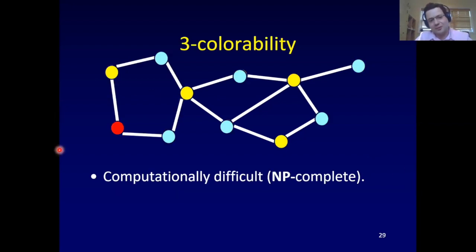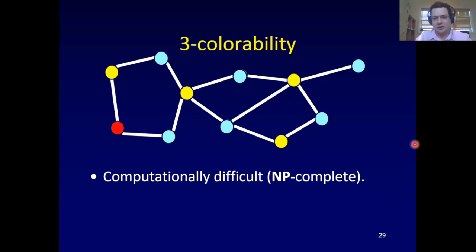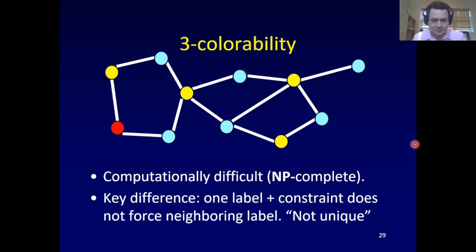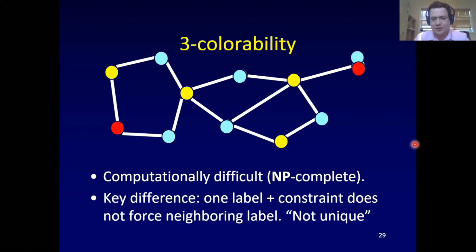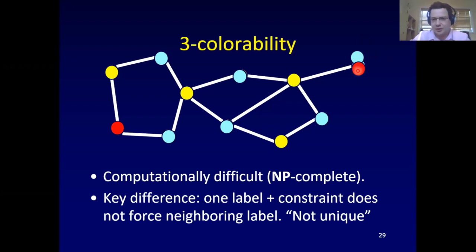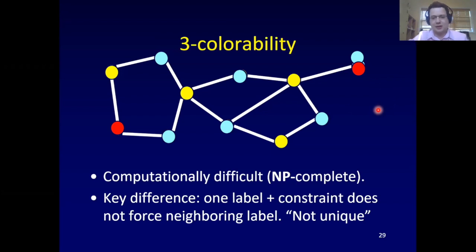Three-colorability, on the other hand, is NP-complete — we believe it to be exponentially difficult in the worst case. It's possible to construct a graph of a few thousand nodes such that solving three-colorability would break a cryptographic system, so at least sometimes it's hard. The key difference is that in two-coloring it was always clear what to do, whereas in three-coloring one endpoint no longer forces the color of the other, giving an exponentially growing number of possibilities.